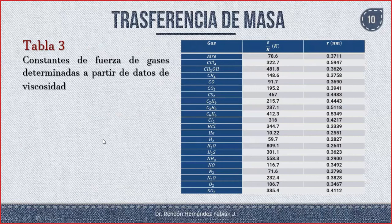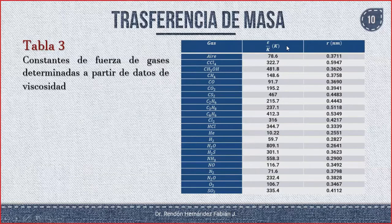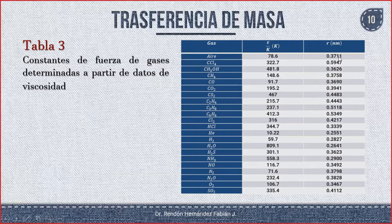Aquí tenemos la tabla 3. Son las constantes de fuerza de gases determinadas a partir de datos de viscosidad. Tenemos el ε/K en Kelvin para cada uno de los compuestos, y el valor de R para cada uno de ellos. Existen tablas donde vienen más datos. Me da el ε/K y el valor de R para cada compuesto.